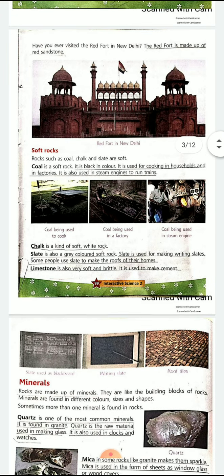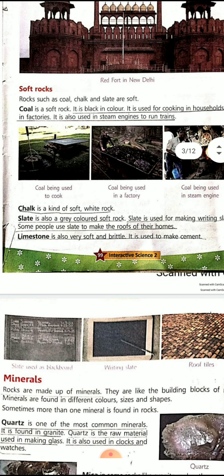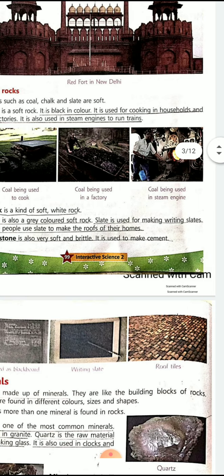Limestone is very soft and brittle. It is used to make cement. Cement is a grey-colored powder that comes in a packet and is used to make homes, decorative items, and pots. So here the topic of rocks — hard rocks and soft rocks — is finished. We can see examples like writing slates, blackboards, chalk used on the blackboard, and roof tiles.